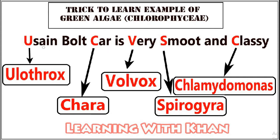So what is the trick? Keeping in mind the previous pictures, we have a sentence: 'Usain Bolt car is very smooth and classy.' Just focus on the red highlighted letters, because those are the keys: U, C, V, S, and C.